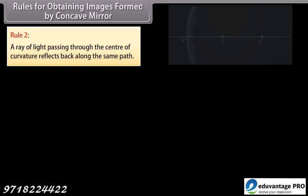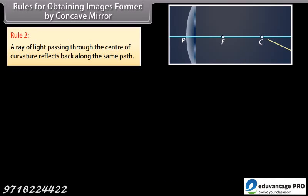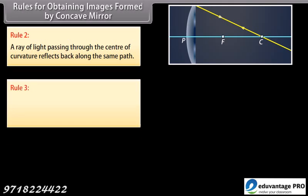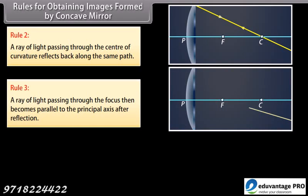Rule 2: a ray of light passing through the center of curvature reflects back along the same path. Rule 3: a ray of light passing through the focus then becomes parallel to the principal axis after reflection.